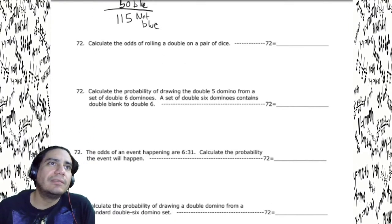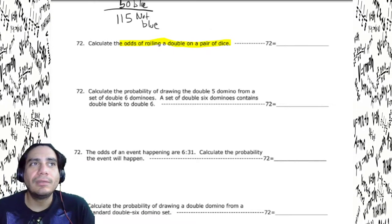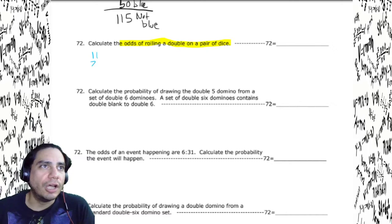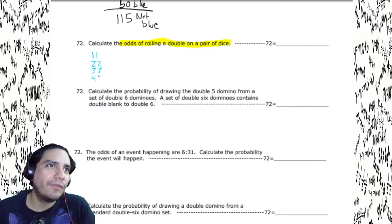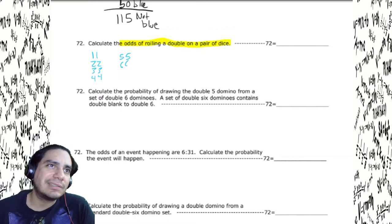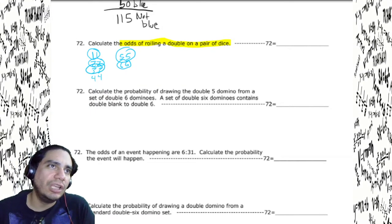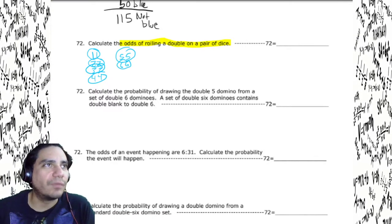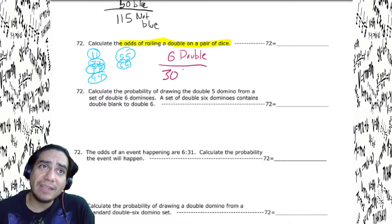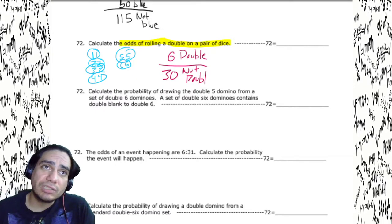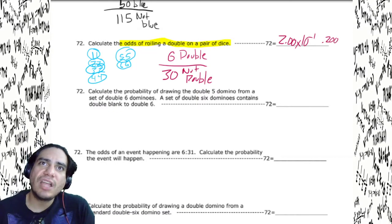Calculate the odds of rolling a double on a pair of dice. Doubles are: 1-1, 2-2, 3-3, 4-4, 5-5, 6-6 — that's six doubles. Since this is odds and there are 36 total possibilities, there are 30 not-doubles. Six divided by 30 gives 2.00 times 10 to the negative first, or 0.200.